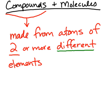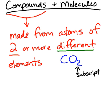Compounds are made from atoms of two or more different elements. An example of a compound is carbon dioxide, CO₂. That little number is called a subscript and it tells you how many atoms of that particular element are in the compound. When there is no subscript, the implied number is one. In CO₂ there are three atoms total: two oxygen atoms and one carbon atom — two different elements combined, making it a compound.